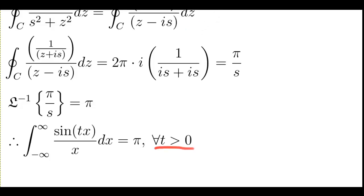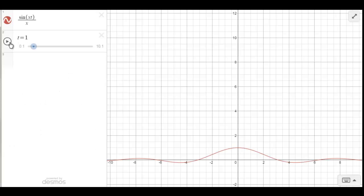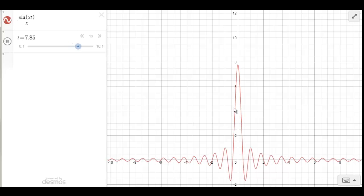And that leads to a visually surprising conclusion, which is that for all t greater than 0, all of these functions shown here, all these different variants of the sinc function, have the same area or integral from negative infinity to infinity. I guess I really shouldn't call it area because there are negative portions in here.